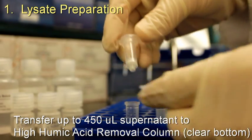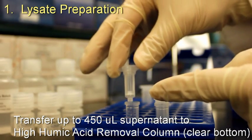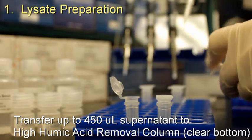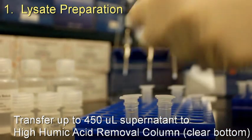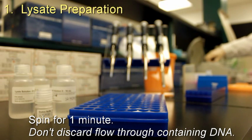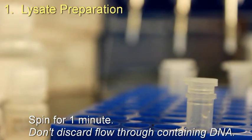Transfer up to 450 microliters to a clear bottom, high humic acid removal column. Spin for 1 minute and be careful not to discard the flow-through containing DNA.